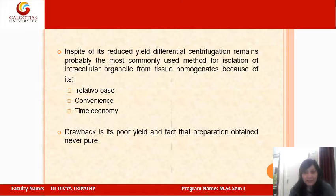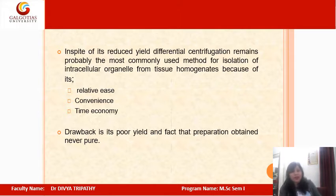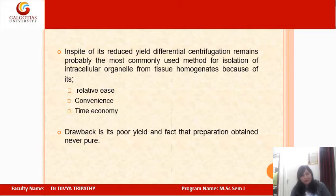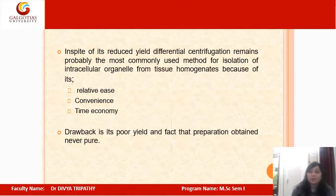Despite its reduced yield, differential centrifugation remains the most commonly used method for isolation of intracellular organelles from tissue homogenates, because of its relative ease, convenience, and economy in terms of time. The main drawback is its poor yield and the fact that preparations obtained are never completely pure, as fractions may contain a mixture of two or three components.